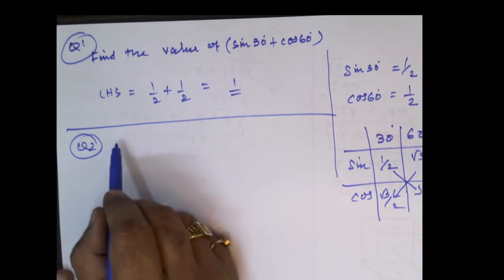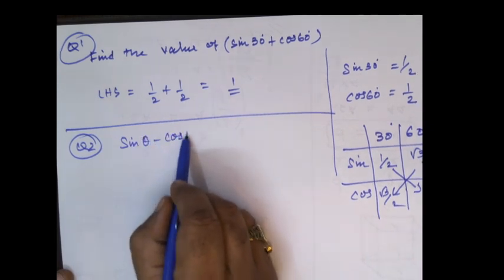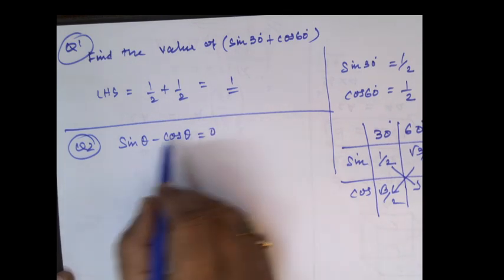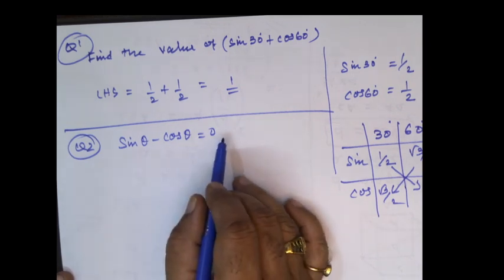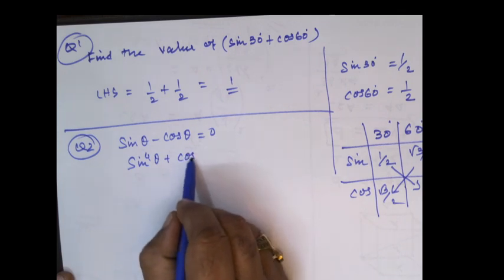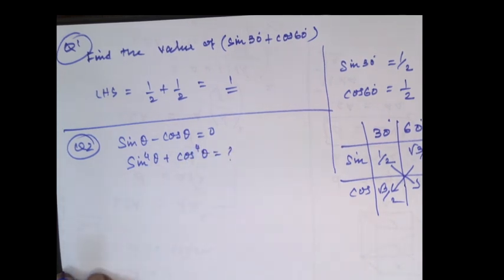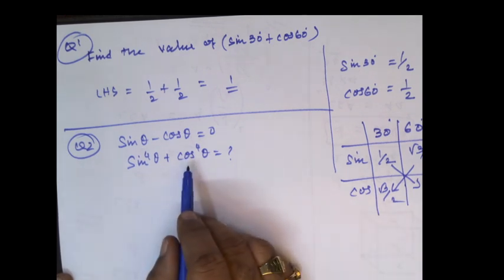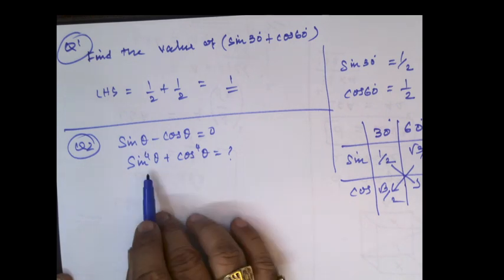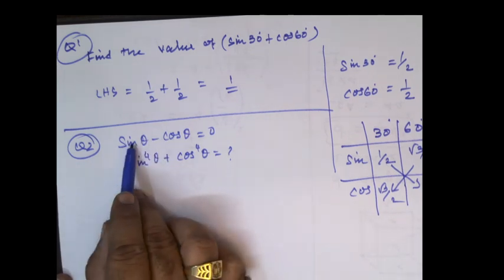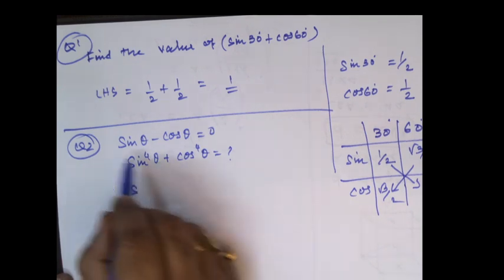If sine theta minus cos theta is equal to 0, find the value of sine power 4 theta plus cos power 4 theta. We know already that sine squared theta plus cos squared theta is equal to 1. But here we have sine power 4 theta plus cos power 4 theta, and they have given sine theta minus cos theta is equal to 0. So let us proceed from the given.